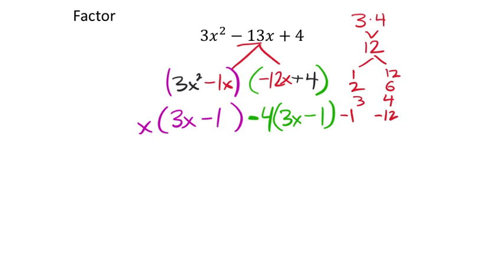So they do match, right? So I can now factor out from both of those terms a 3x minus 1, and I am then left with what's left of the two terms, just like we saw in the last example, an x and a minus 4.